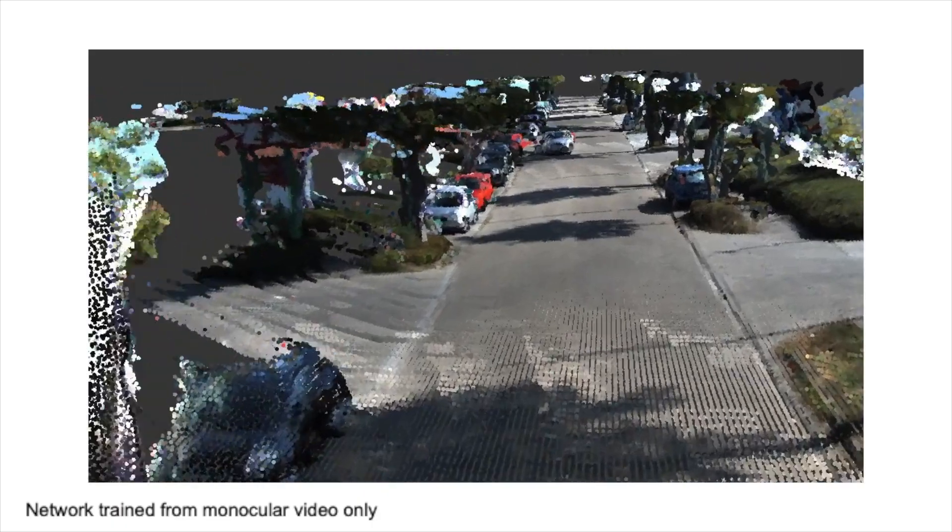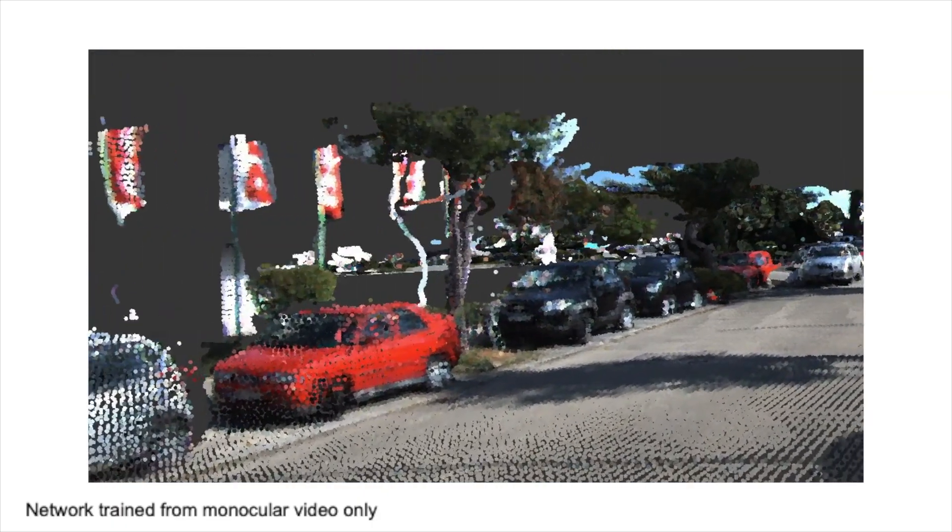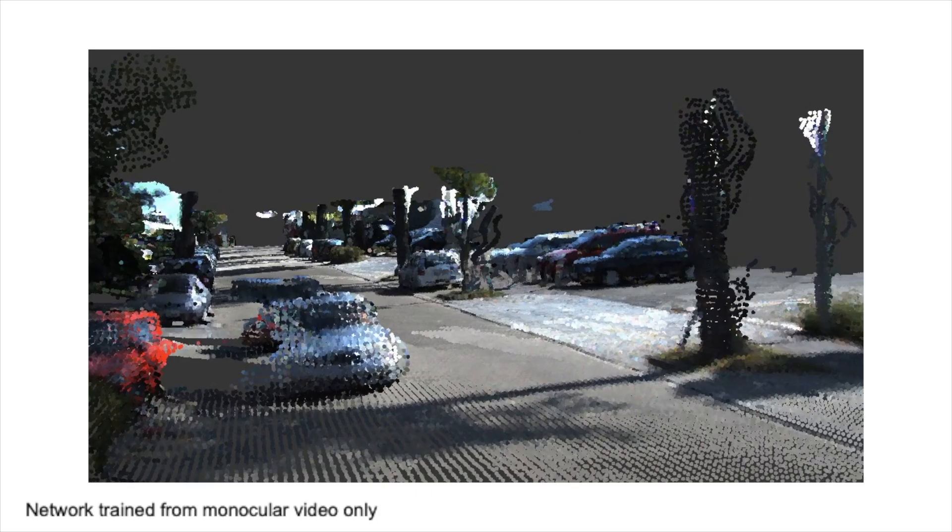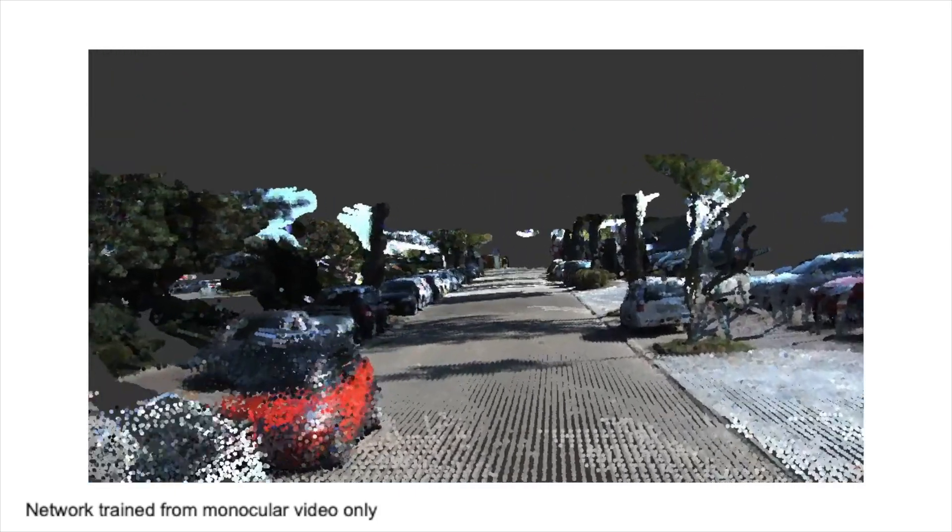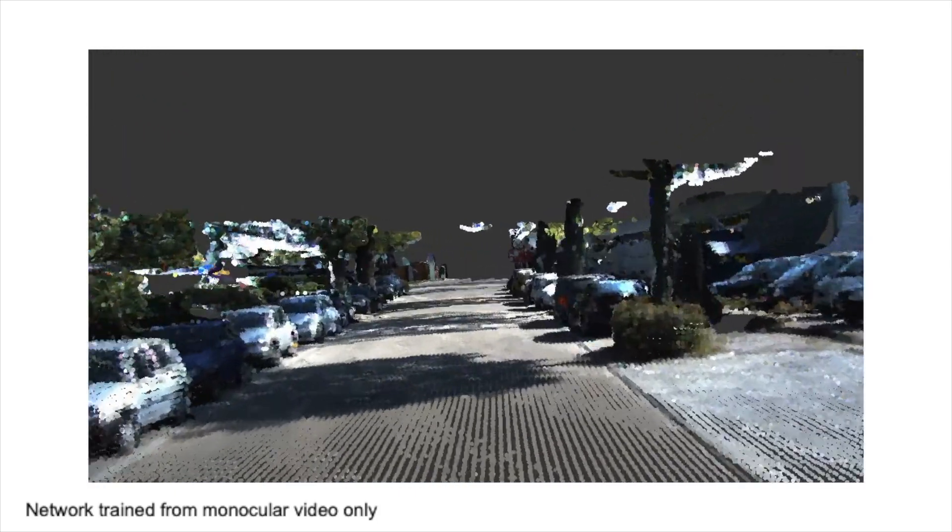ManyDepth is a new method for depth estimation, which combines the learning-based priors of monocular depth networks with the geometric reasoning of multi-view stereo to leverage the best of both worlds. This allows us to accurately predict depth for single images and a sequence of frames when available.